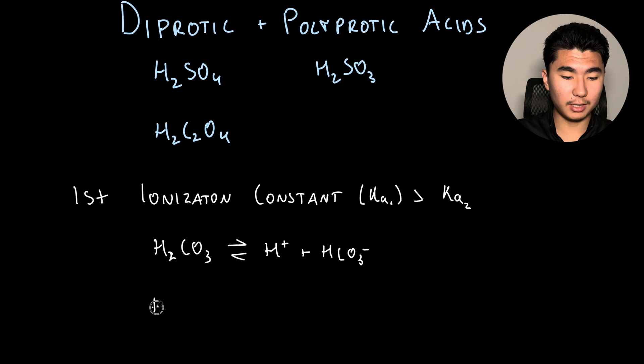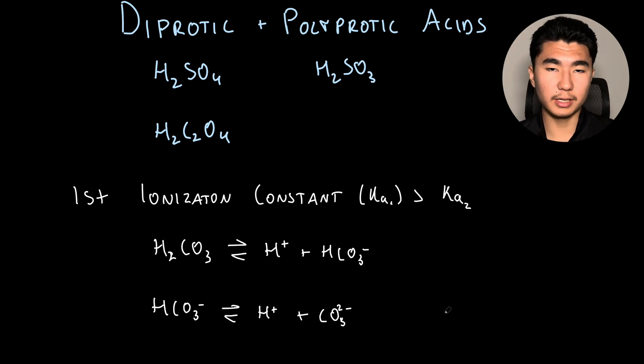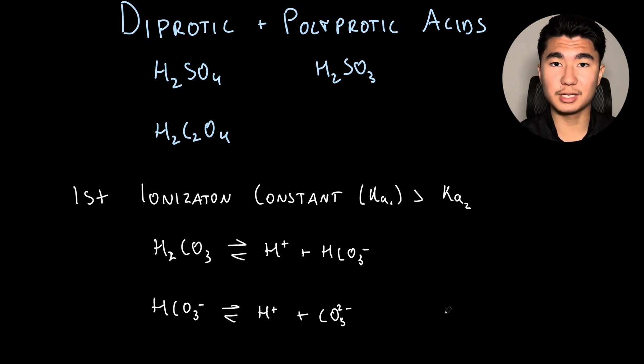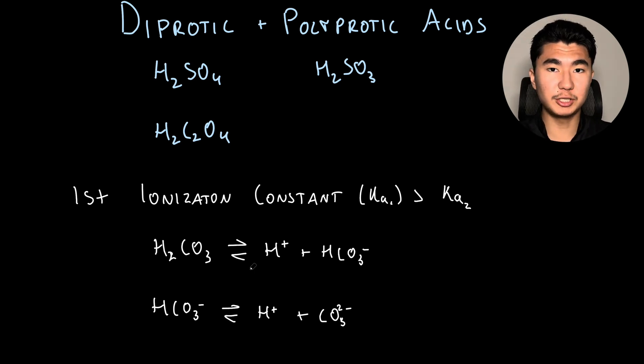If we keep going with HCO3- to H+ plus CO3 2-, this ionization constant is going to be even lower. The higher our negative charge gets, the harder it is, and the lower our ionization constant will be. It's hard to pull a hydrogen from a charged species, but if you increase that charge, it becomes even harder.